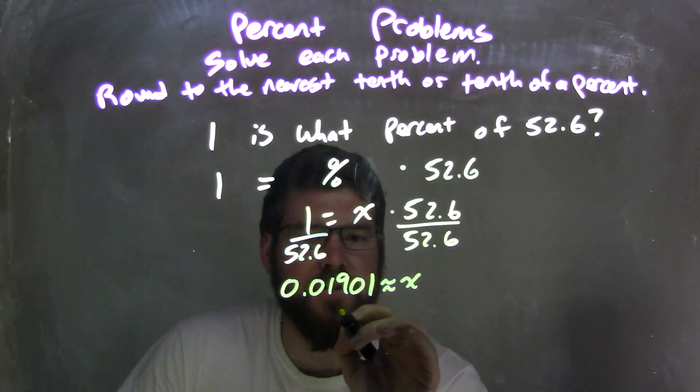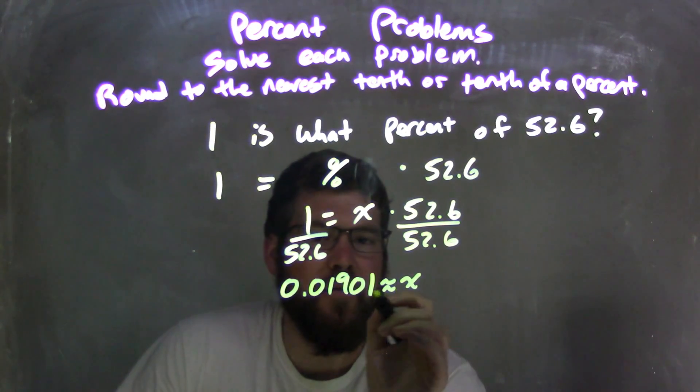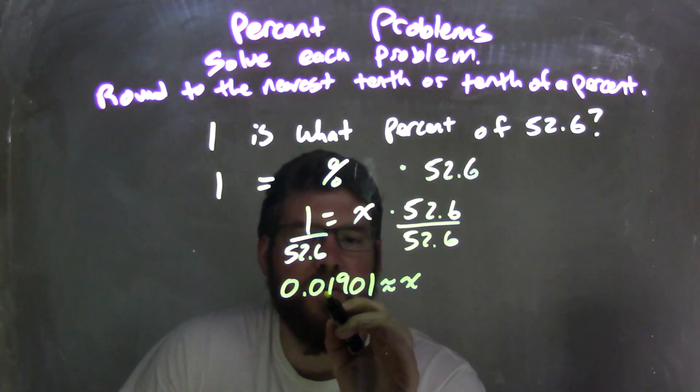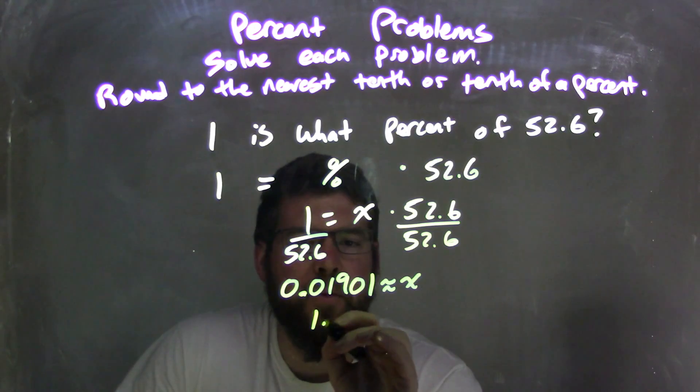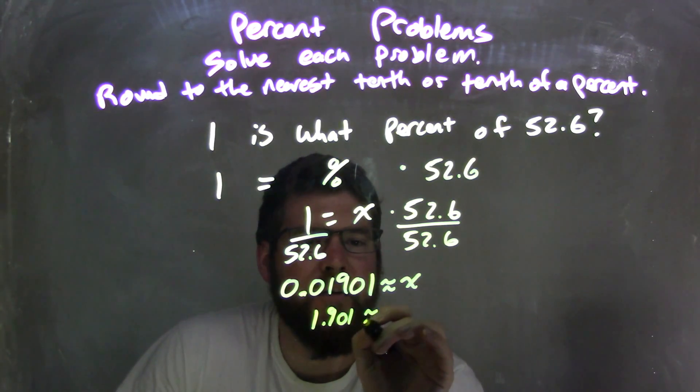We're left with a decimal of 0.01901, approximately equal to x. We can rewrite this to have x come first and convert that to a percent by multiplying by 100.